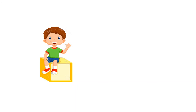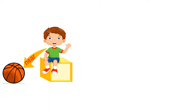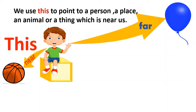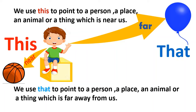Now let us look into another example. Here we have Rishi. Rishi has a ball next to him. The ball is near to him and there is only one ball. In this case, we should use 'this'. We use 'this' to point to a person, a place, an animal or a thing which is near us. Then when do we use 'that'? There is a balloon but it is far from Rishi, so we have to use 'that'. We use 'that' to point to a person, a place, an animal or a thing which is far away from us.